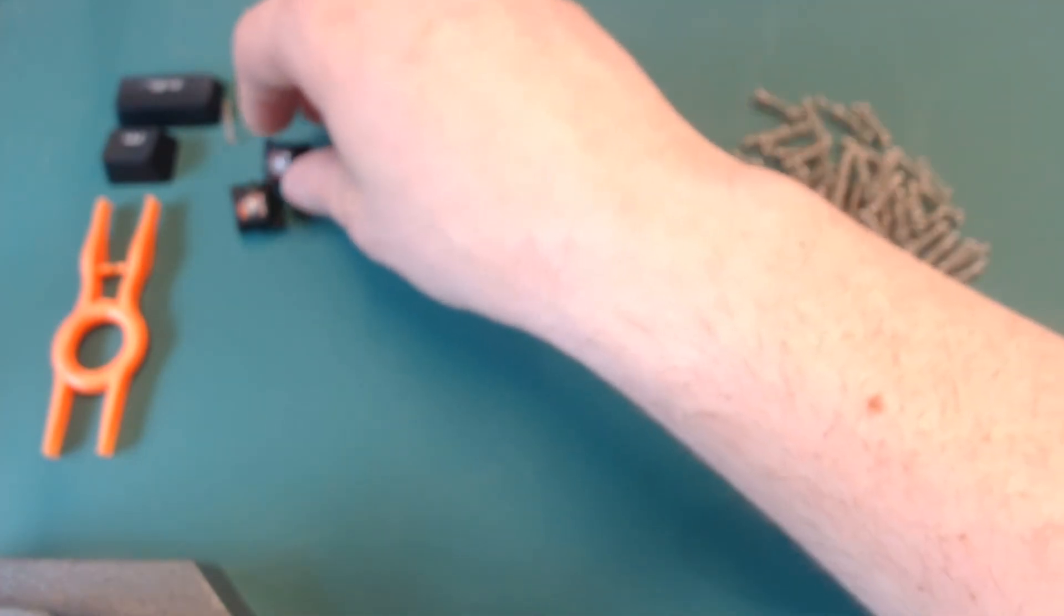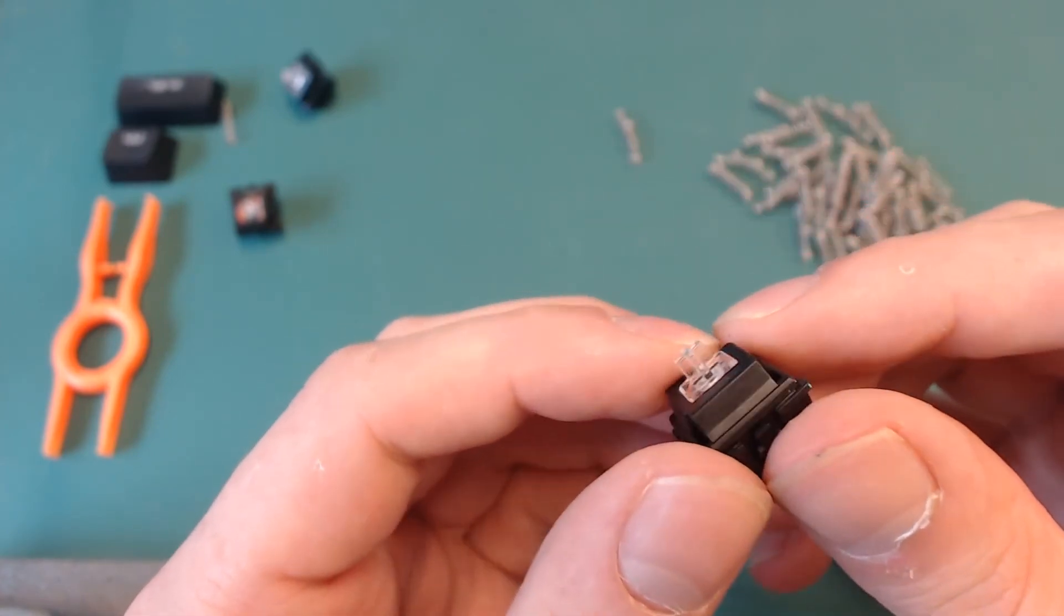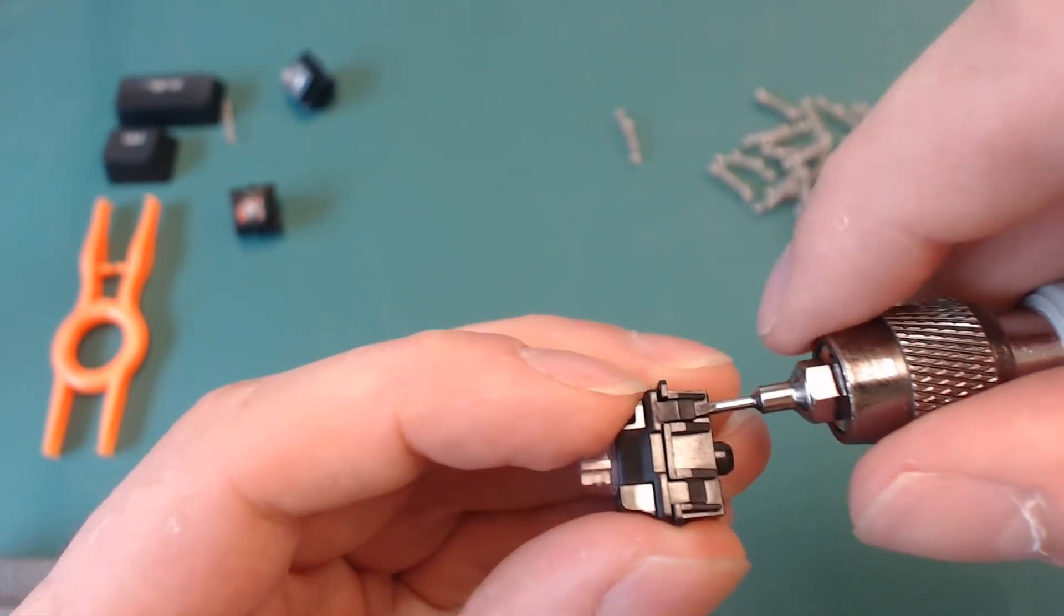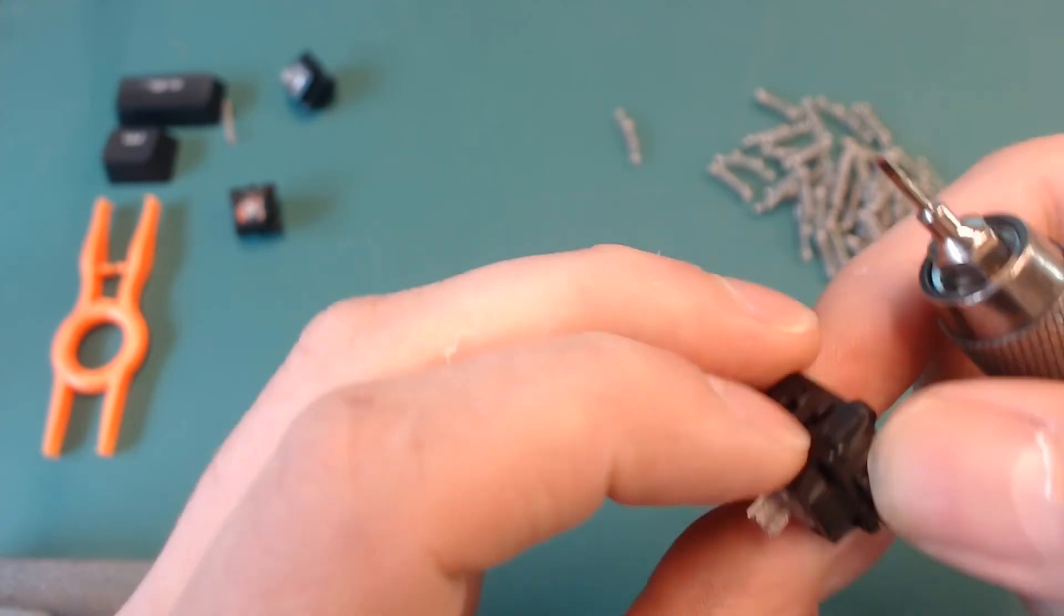I'm also going to show the blue Flare-tech switch because these can be a bit more difficult as they have more parts inside. The first thing we're going to do is also remove the top case. It's the same as the red switch.